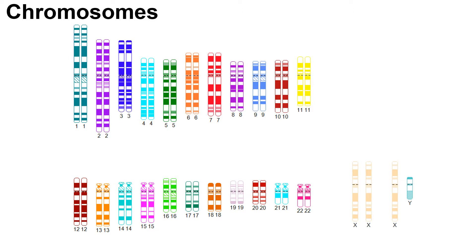DNA is our body's instruction manual, telling our bodies how to develop and function. Each person typically has two copies of each chromosome, except for the X and Y chromosomes. Individuals assigned male at birth are typically XY, and individuals assigned female at birth are most often XX.